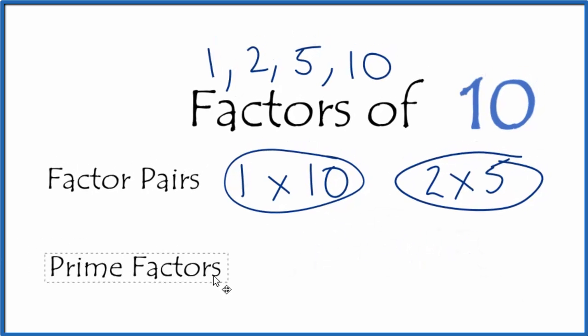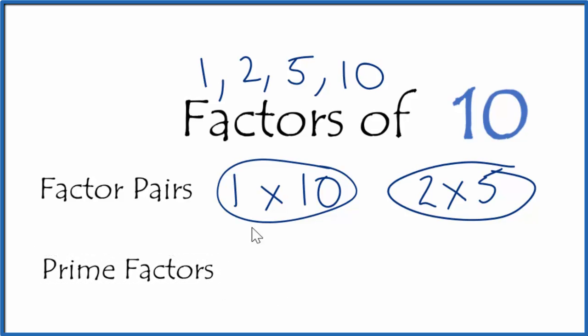If we want to find the prime factors of 10, 1 and 10, those aren't prime numbers, but 2 and 5, those are prime numbers. So our prime factors for 10 are 2 times 5.